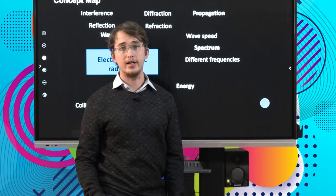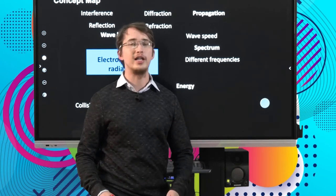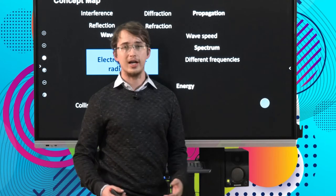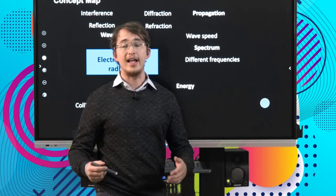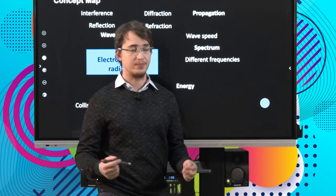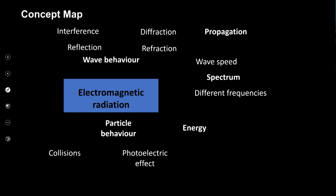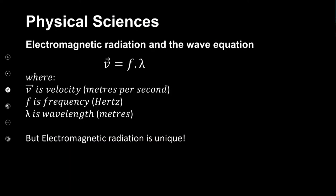Welcome back from that short break. It's time now to delve deeper into electromagnetic radiation. We're now going to take a closer look at the wave equation and how it applies specifically to electromagnetic radiation, and later we're going to have a look at how electromagnetic radiation propagates. Let's head to our concept map. We've been unpacking electromagnetic radiation — we've looked at the properties it exhibits like waves and the properties of particles it exhibits. It's now time to bring in this idea of how fast the wave is traveling and how it propagates through space.